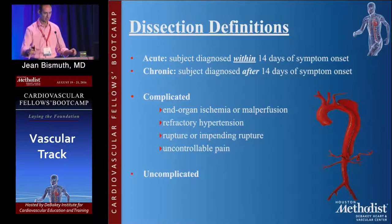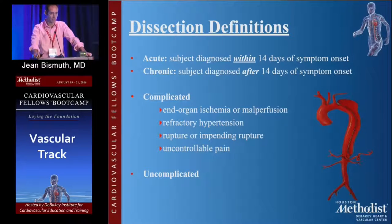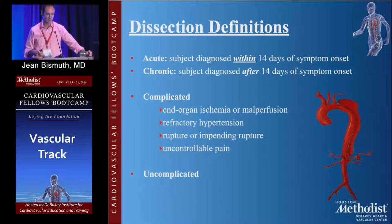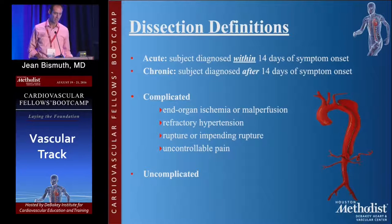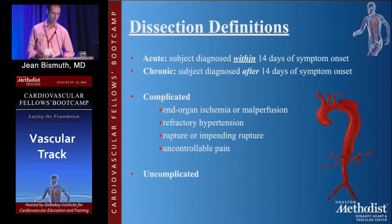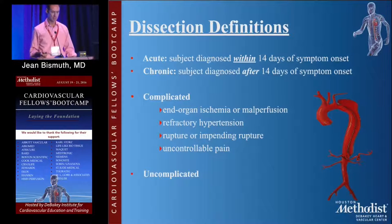Dissection definitions. There are some very simple definitions. Acute is essentially diagnosed within the first 14 days of symptom onset, and chronic is everything after that — based on really old anatomical data from cadaveric specimens. Complicated dissection involves end-organ ischemia or malperfusion, refractory hypertension, rupture or impending rupture, and uncontrollable pain. And then, of course, you have your uncomplicated dissections.